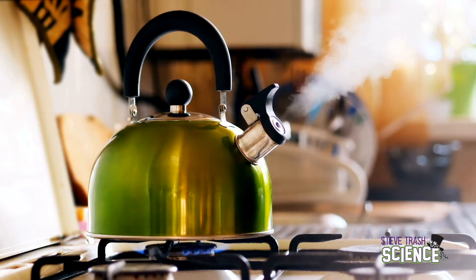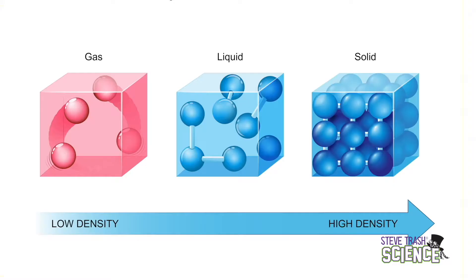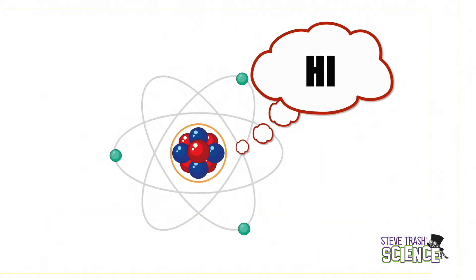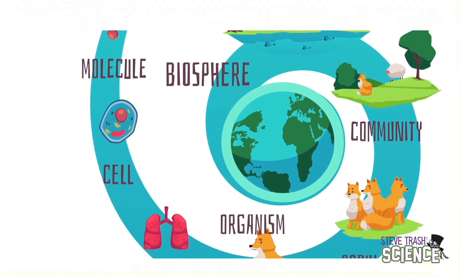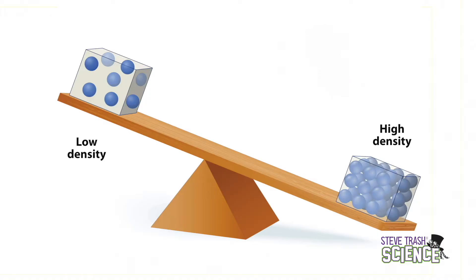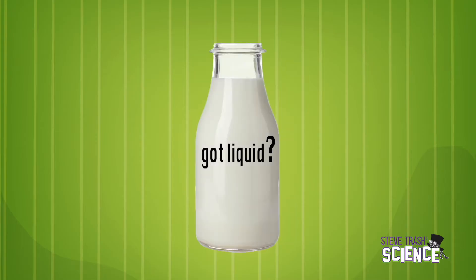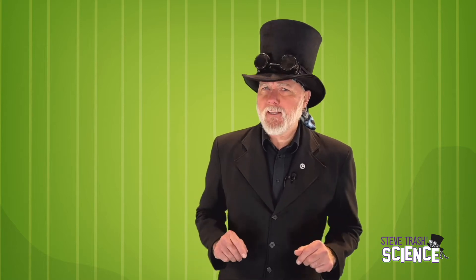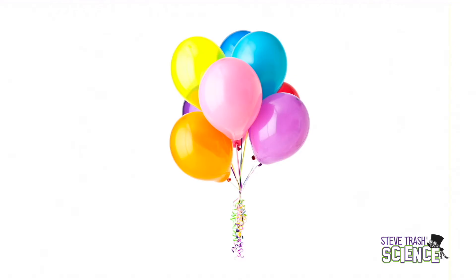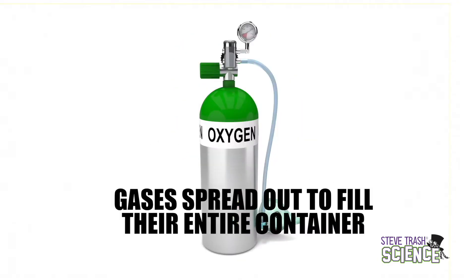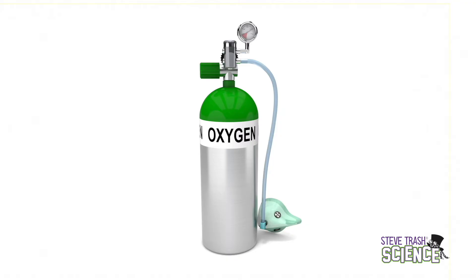Solids, liquids, and gases are different for a reason — their atoms have different arrangements. Atoms are small particles that make up all matter. The atoms in solids, like rocks, hold their own shape well due to tightly linked atoms. Liquids like milk don't have a set shape; they take the shape of their container, because their atoms aren't tightly linked. The atoms in gases are even farther apart, so gases spread out to fill their entire container and can also be squeezed together.